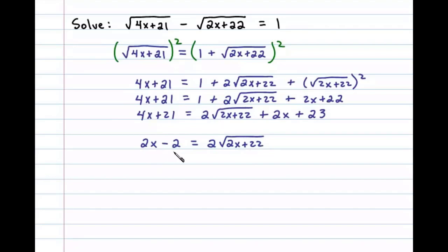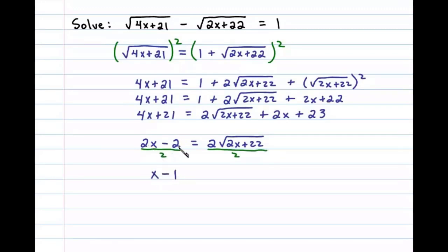Now at this point I notice all the terms are divisible by 2, so we can simplify things if we divide both sides by 2 before continuing. Doing that leaves us with x minus 1 equals the square root of 2x plus 22.